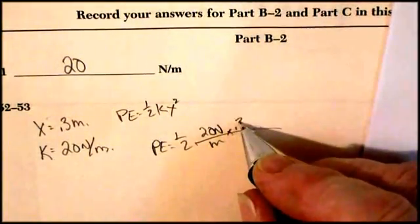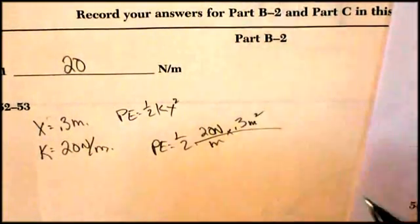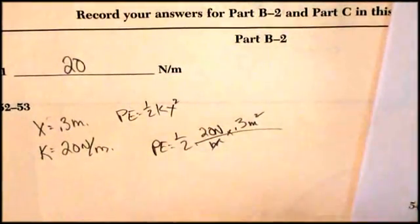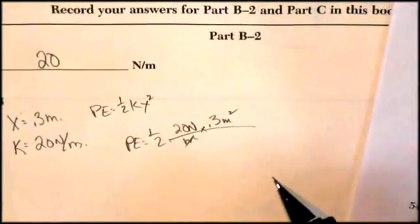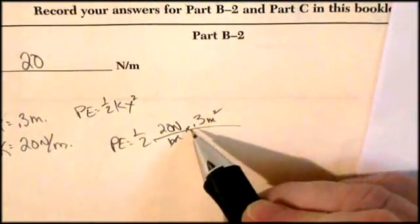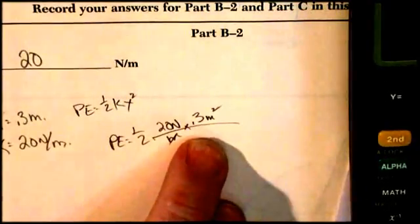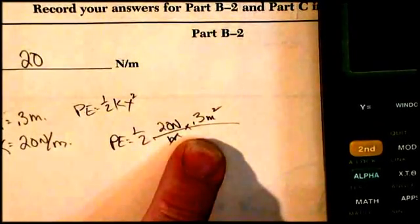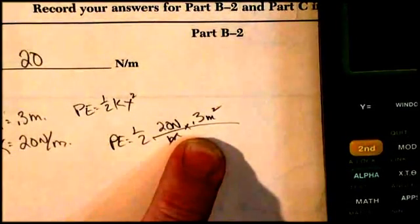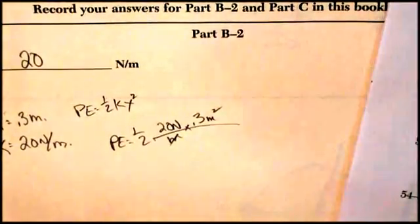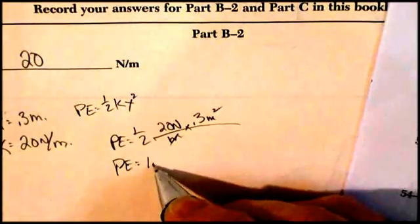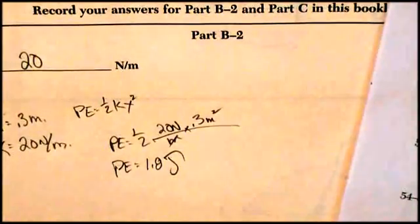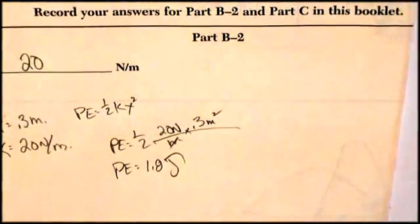We'll lose one of the meters and have Newton meters, which is joules, so that'll work good. And so now we're just going to multiply and don't forget to square the 0.3. So I'm going to say 20, I've got it on my calculator already, times 0.3 squared. I got 1.8. I'm going to say the potential energy is equal to 1.8 joules.